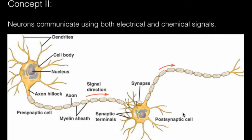Concept number two states that neurons communicate using both electrical and chemical signals. Before we go into this concept, I want to emphasize that neurons contain three typical areas. We have the dendrites, which are hair-like structures coming out from the soma, or body of the cell, and the axon. Information usually travels only in one direction — from dendrites to the soma, and from the soma to the axon. The axon makes another connection with the dendrites, and even the cell body, of another neuron.